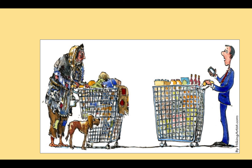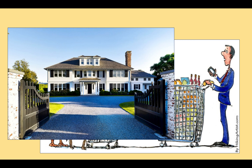By contrast, standard of living is about how much money people make. The gentleman on the right is extremely rich — everything in his trolley is shopping from the supermarket, and he's going to host a grand party. The gentleman on the left is much poorer; in his trolley are all his possessions. The phrase we use to describe this difference is standard of living — the gentleman on the right has a higher standard of living because he makes more money.